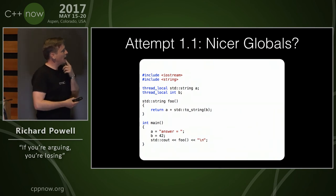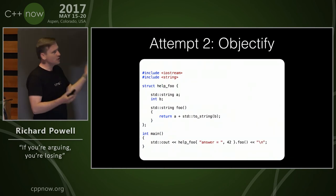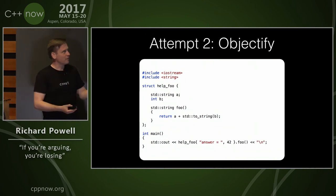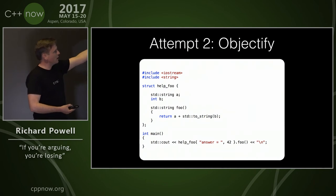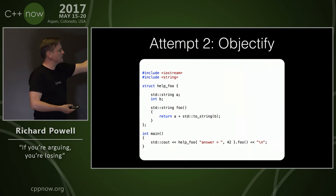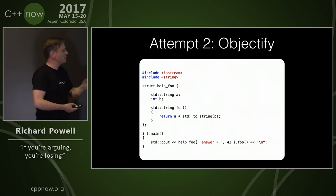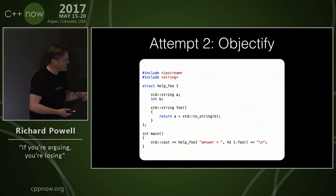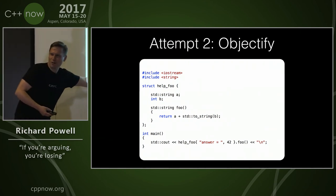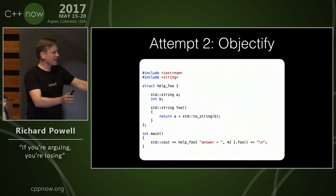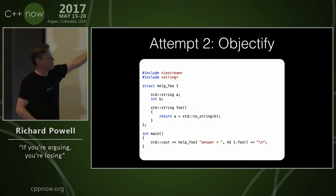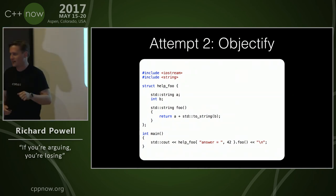What about another approach — using objects? Instead of reading from the global, I'll just read from local state. I'm going to create a structure, have it hold two values, then have a member function that just calls those. Technically you might call those arguments, but I think that's the compiler doing the work for me, so I'm not going to count that. My function doesn't have any arguments — I think that's a win.